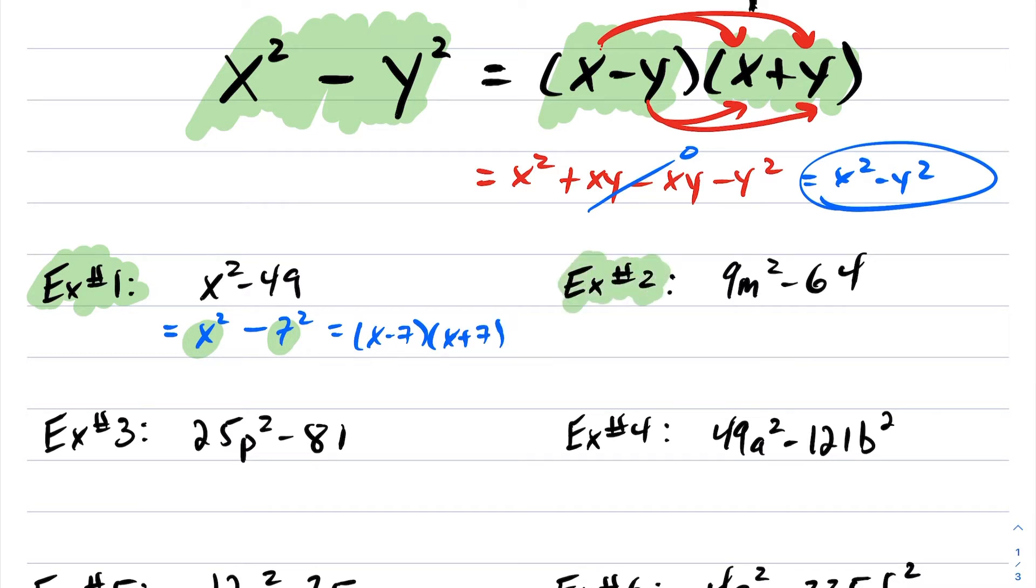Okay, let's look at example 2. So same idea here. Here, I want to be able to express this as powers of 2. So this will be (3m)² - 8². Now again, this is my x, this is my y. So this will factor into (x - y)(x + y).